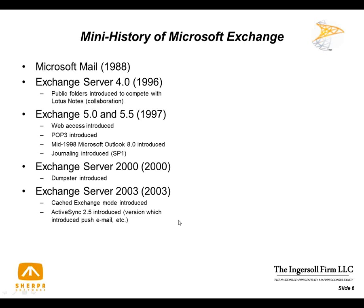Exchange 2003 had a couple of significant introductions. One was Cached Exchange Mode, which introduced the concept of having two mailboxes — one on the Exchange Server and another locally cached in an OST or offline store. A synchronization process was introduced so that when the network went down or a person got on an airplane, they still had full access to their mailbox. ActiveSync, Microsoft's platform for synchronizing mail with PDAs, smartphones, and iPhones, was also first introduced with Exchange 2003.